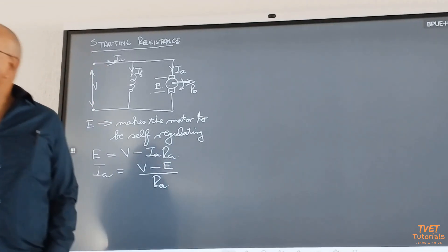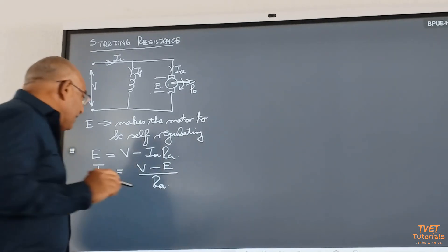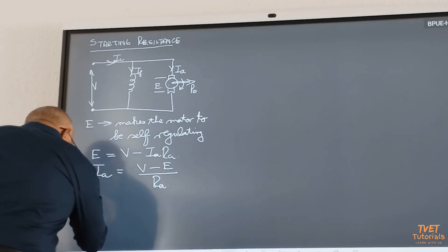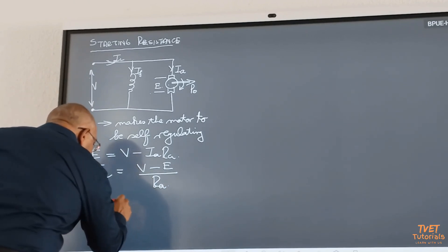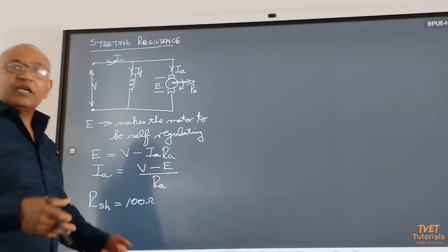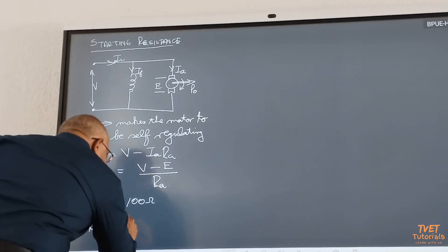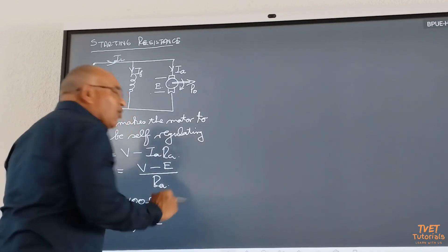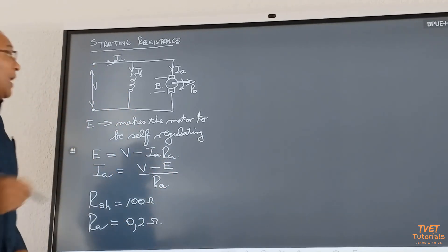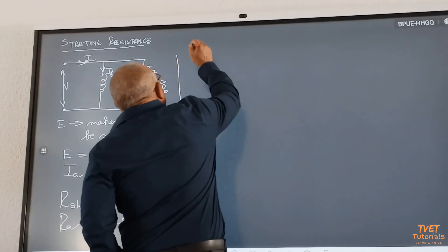If you look at all the examples in Technology M3, Techniques M4, Techniques M5, you'll find in a typical example, R shunt might be 100 ohm, 110 ohm, 120 ohm. But resistance armature is always a tiny value, 0.2, 0.3, right? So from this example here, we are going to say...